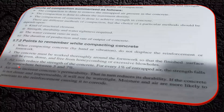The main thing to remember is that air voids reduce the strength of concrete. For every 1% of entrapped air, the strength falls somewhere between 5 to 7%. So if you have more voids, strength is going to come down.